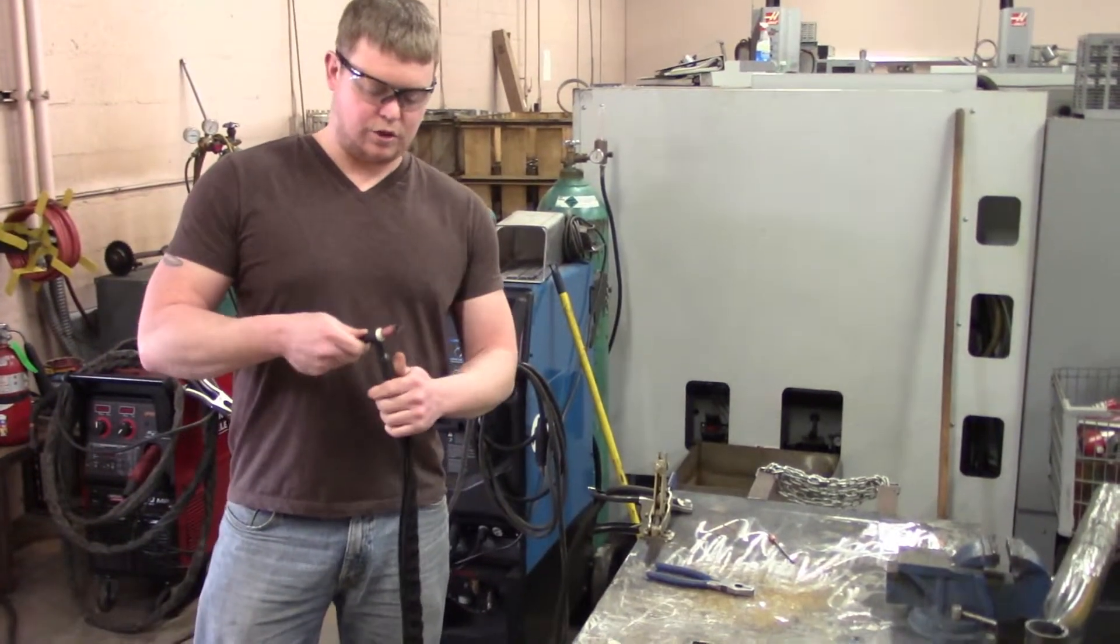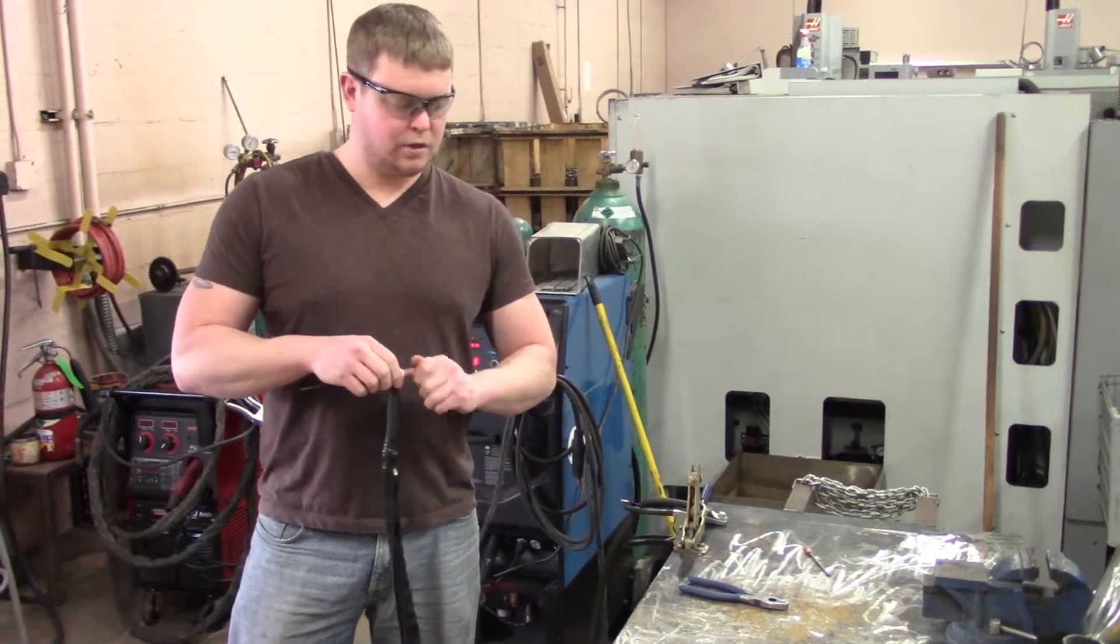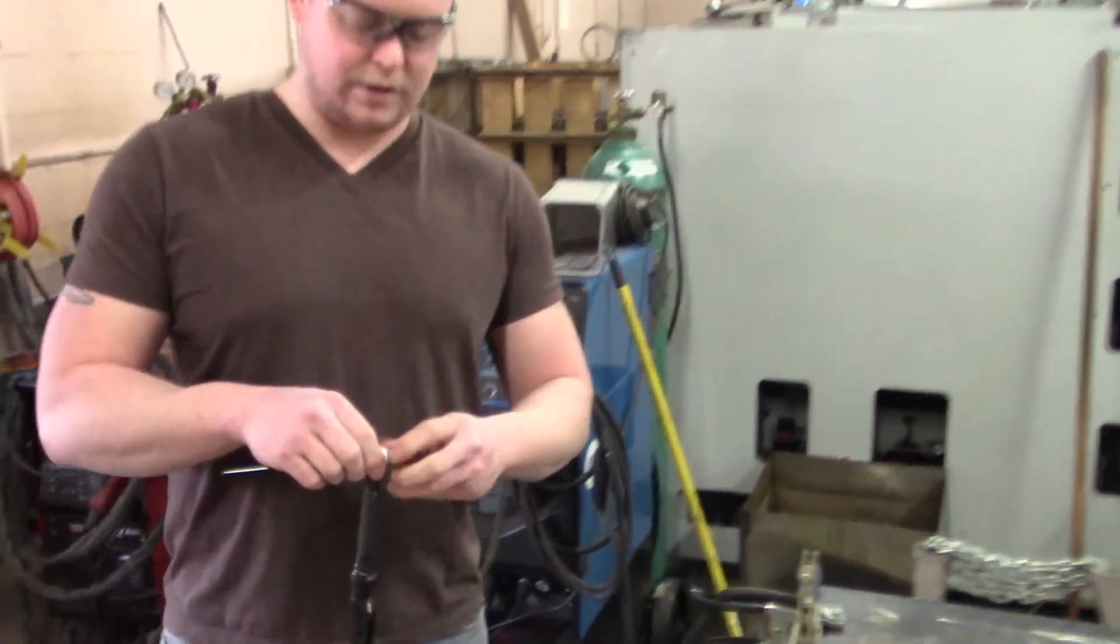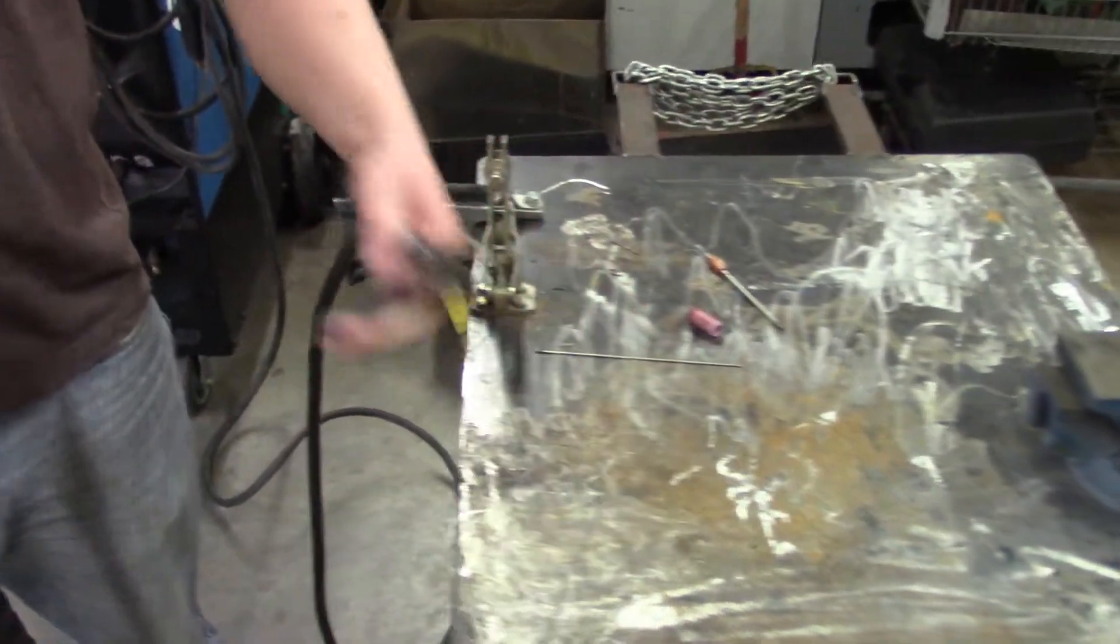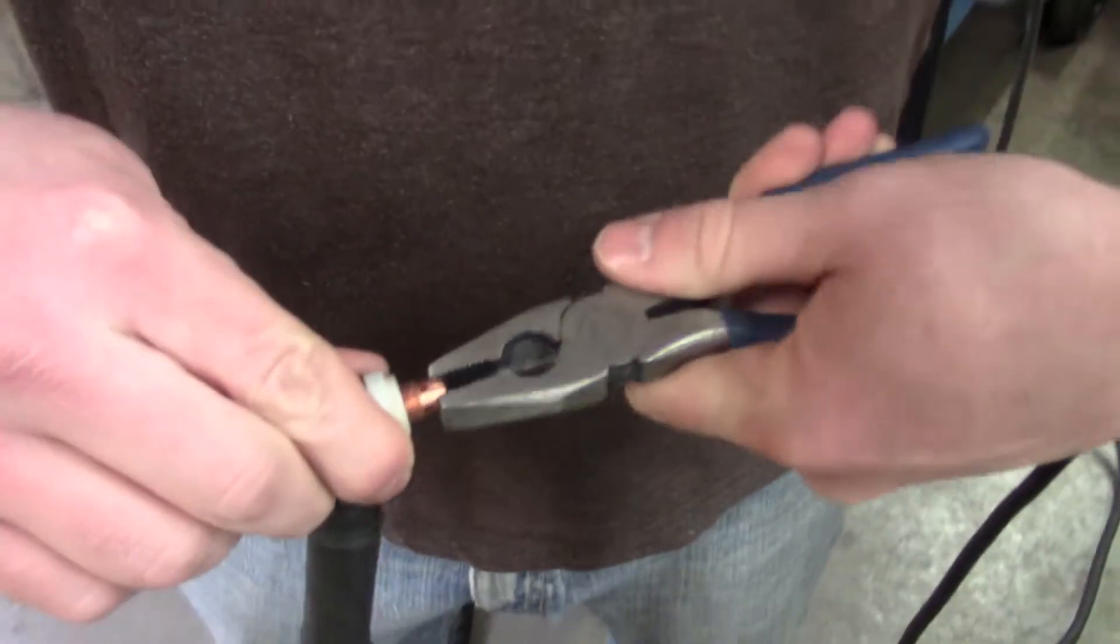What we're doing is switching up our tungsten. Because we're going to a heavier diameter tungsten—this is 1/16 inch—we've got to take all the guts out of the inside of the torch. That means removing your collet and your collet holder.